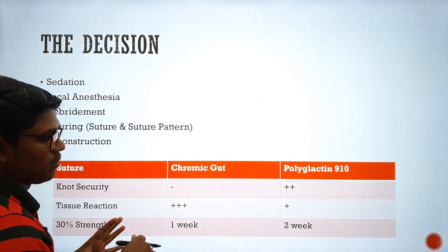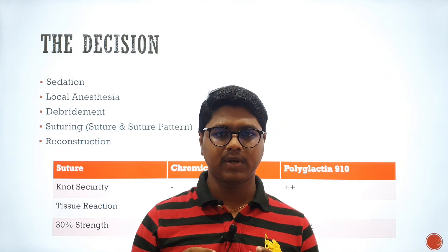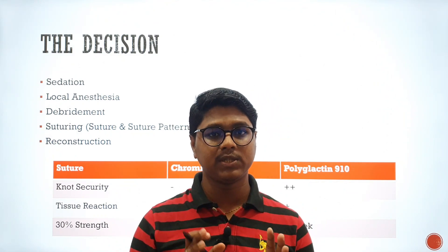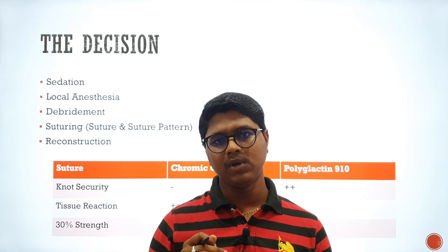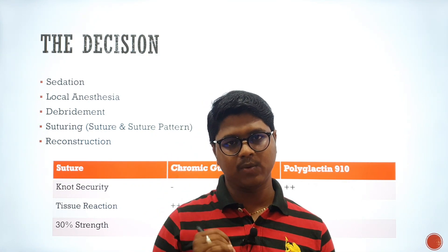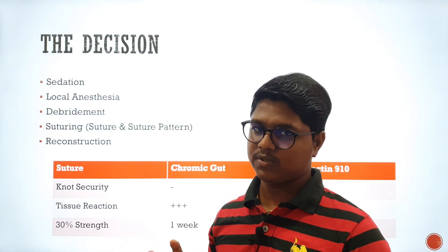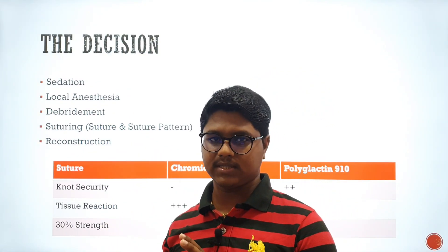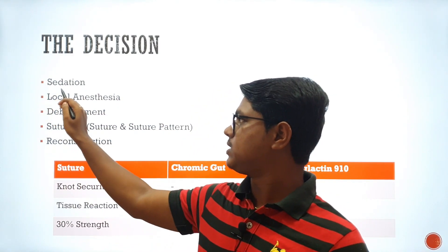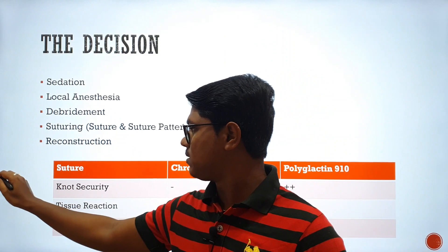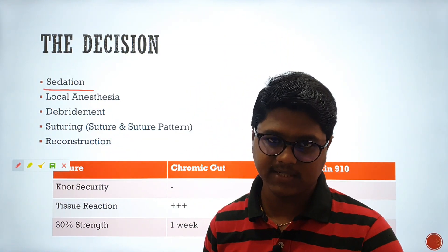Next, the decision — what to do. In surgery, after doing the preliminary examination, you have to decide what to do, and you have to do it in a stepwise manner. First, I went for sedation, because you cannot do a strong operation or local anesthesia in a large animal like a 400 kg body-weight cow.